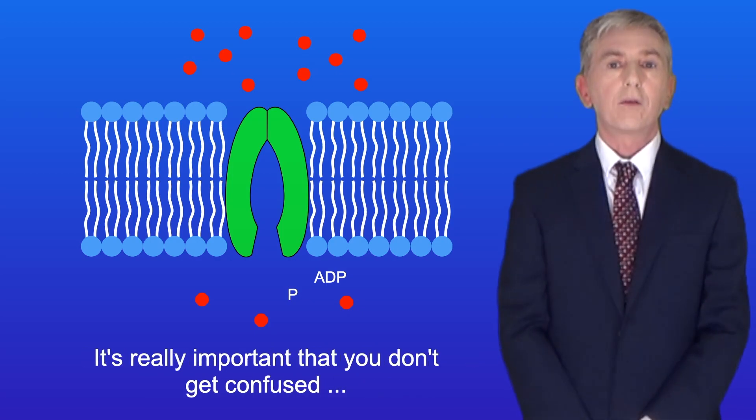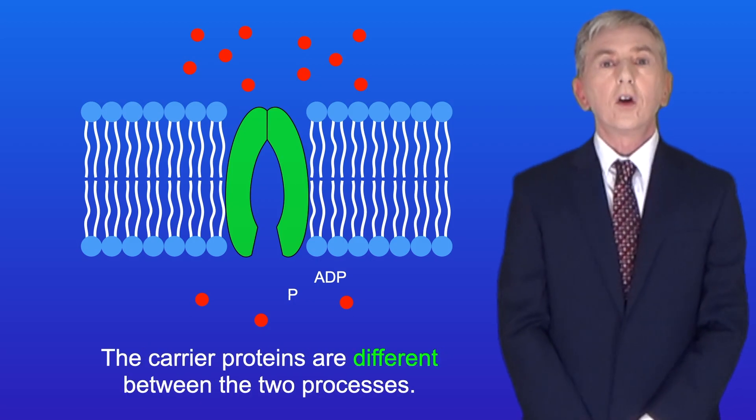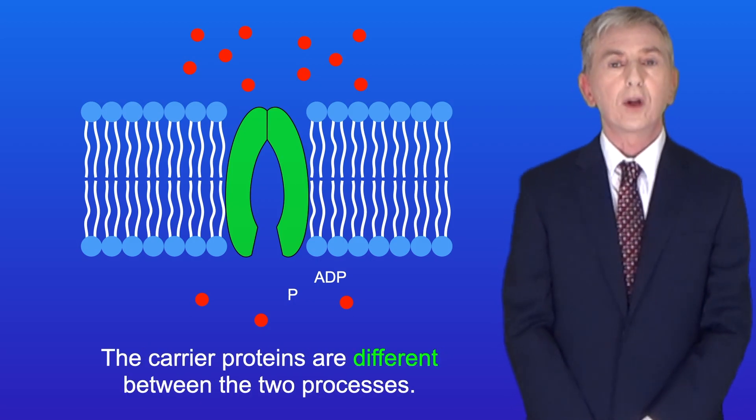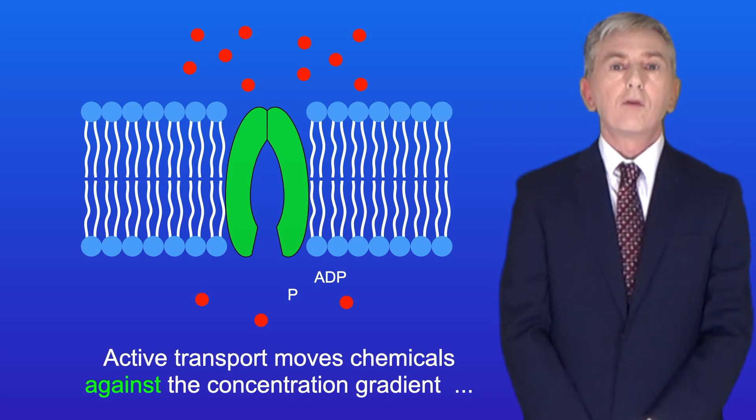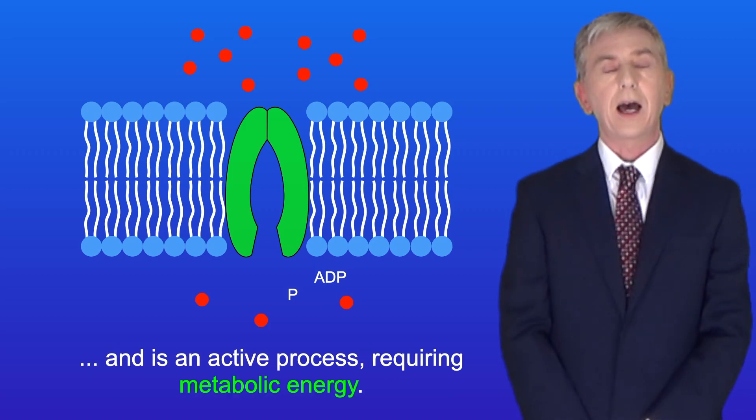Now it's really important that you don't get confused between active transport and facilitated diffusion. Firstly, the carrier proteins are different between the two processes. Remember that active transport moves chemicals against the concentration gradient and is an active process requiring metabolic energy.